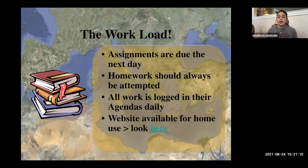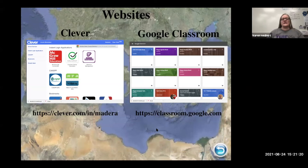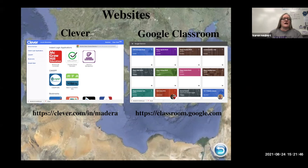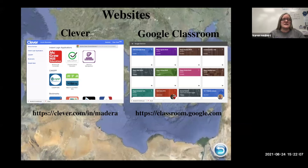There's a website available for home use. Your two main websites to be familiar with are Clever and Aries. Your child will visit Clever daily — it has all their activities, textbooks, and online materials they can access at home. Parents can check grades through Aries, and there's also an Aries link within Clever.